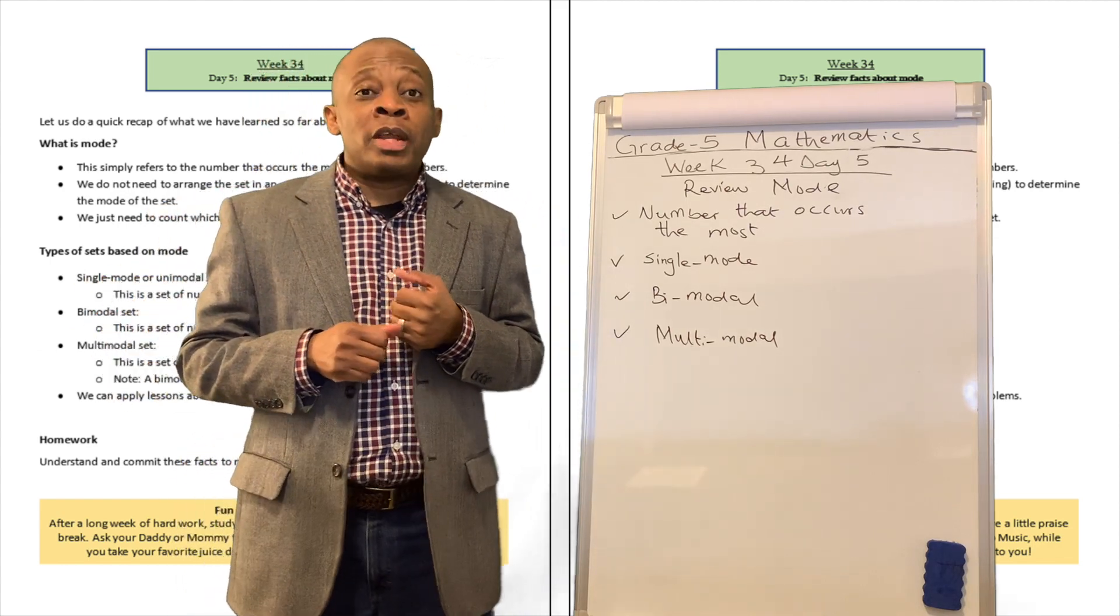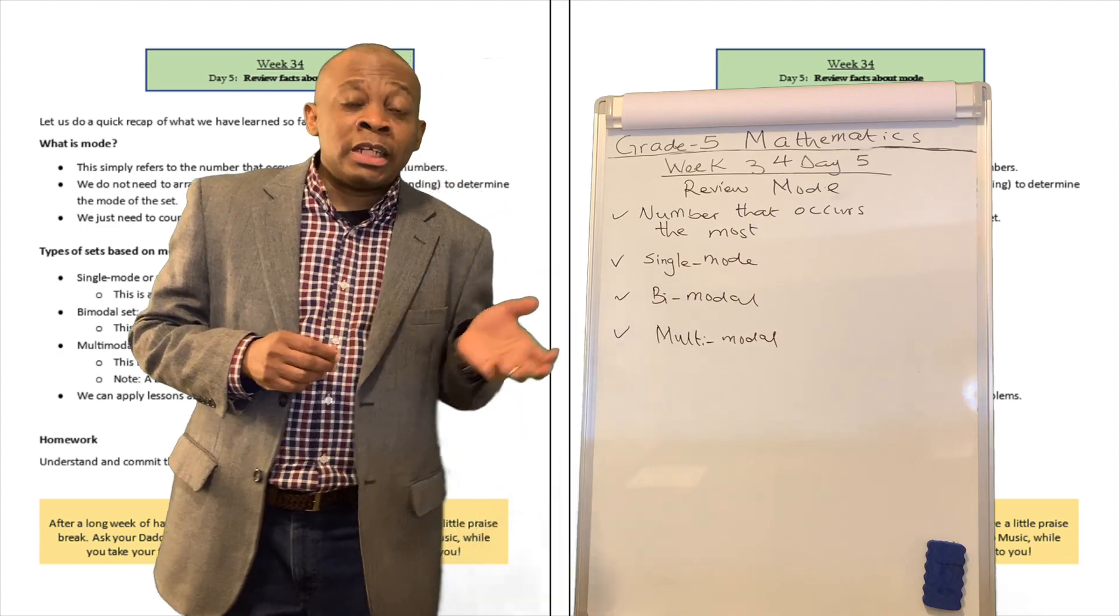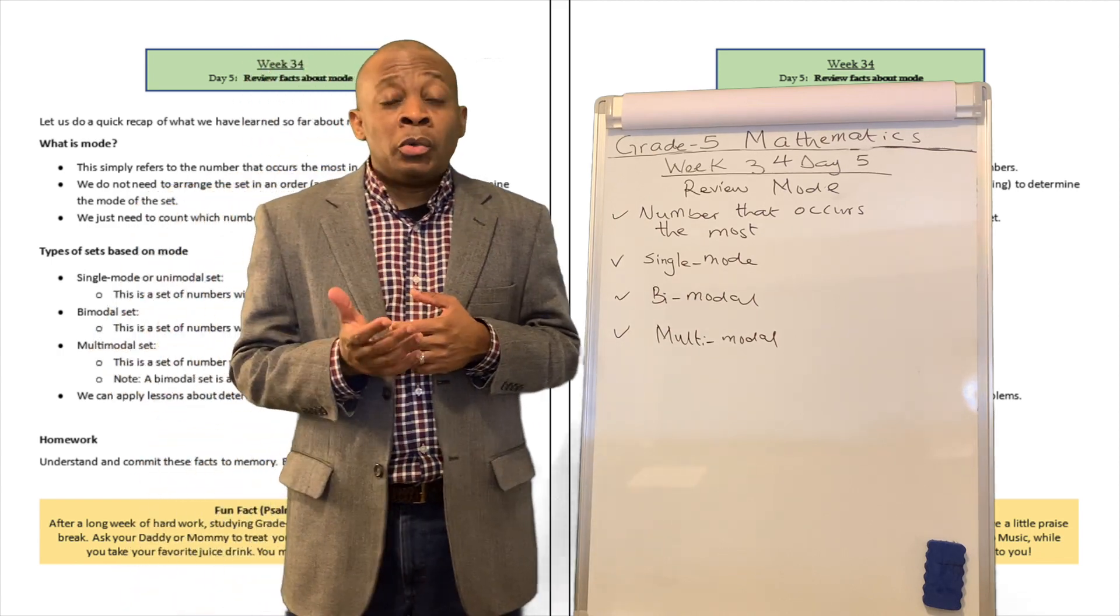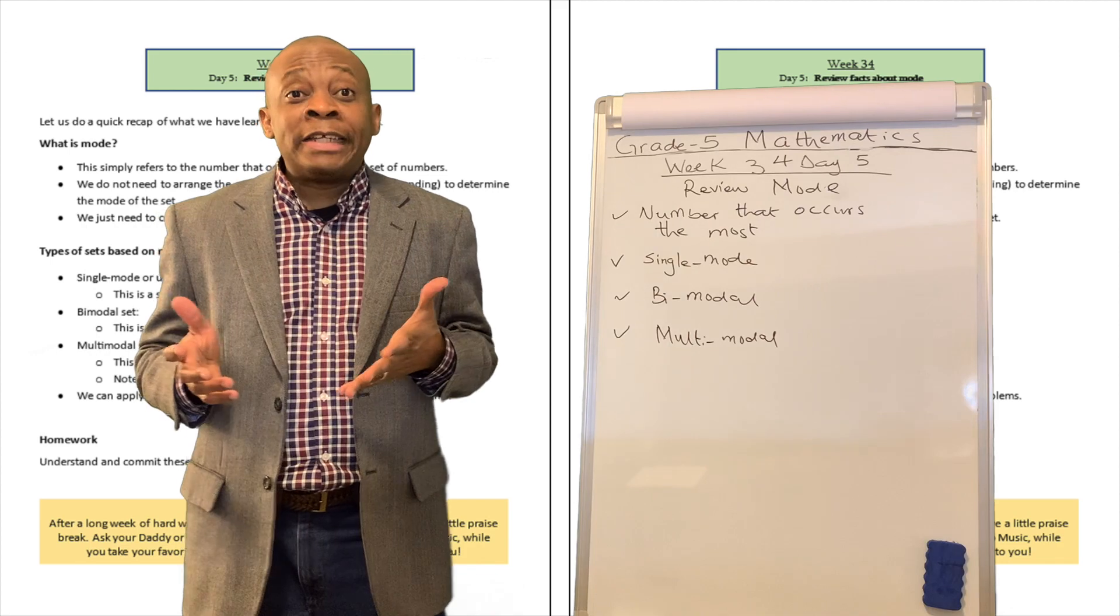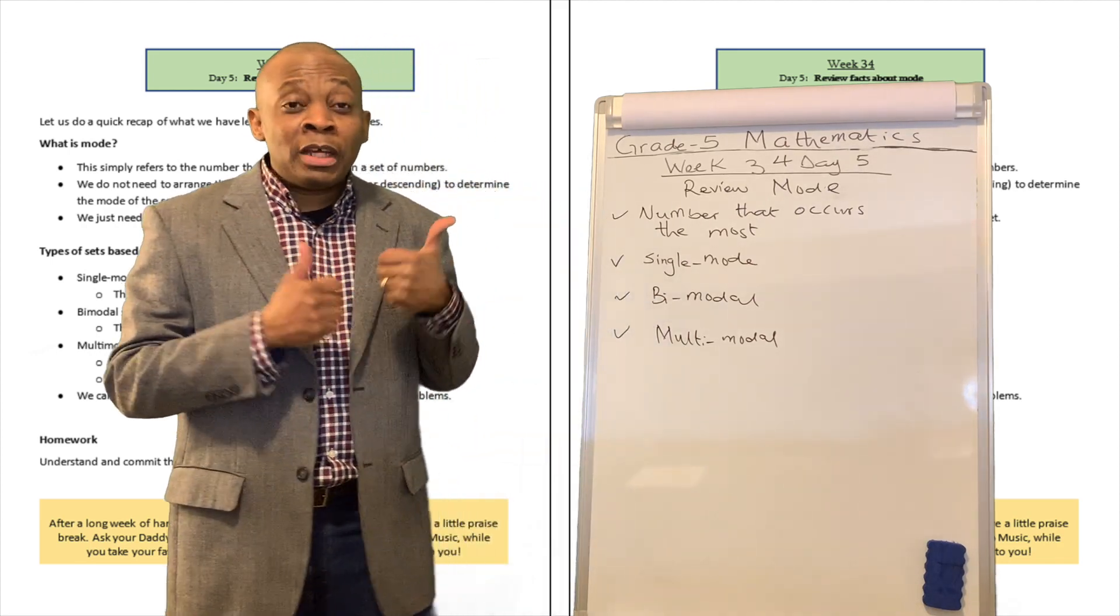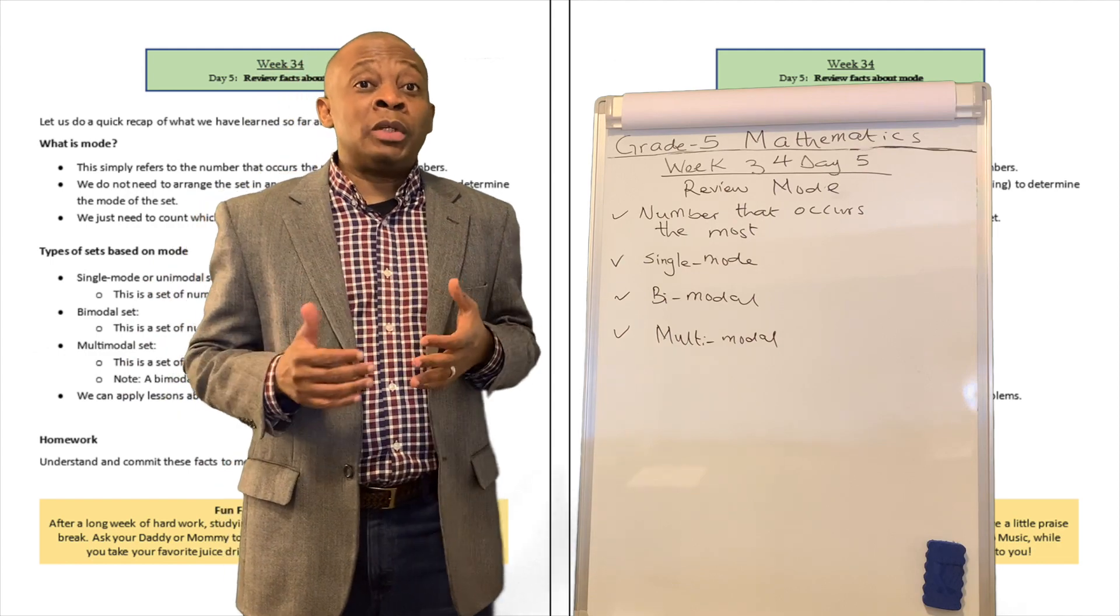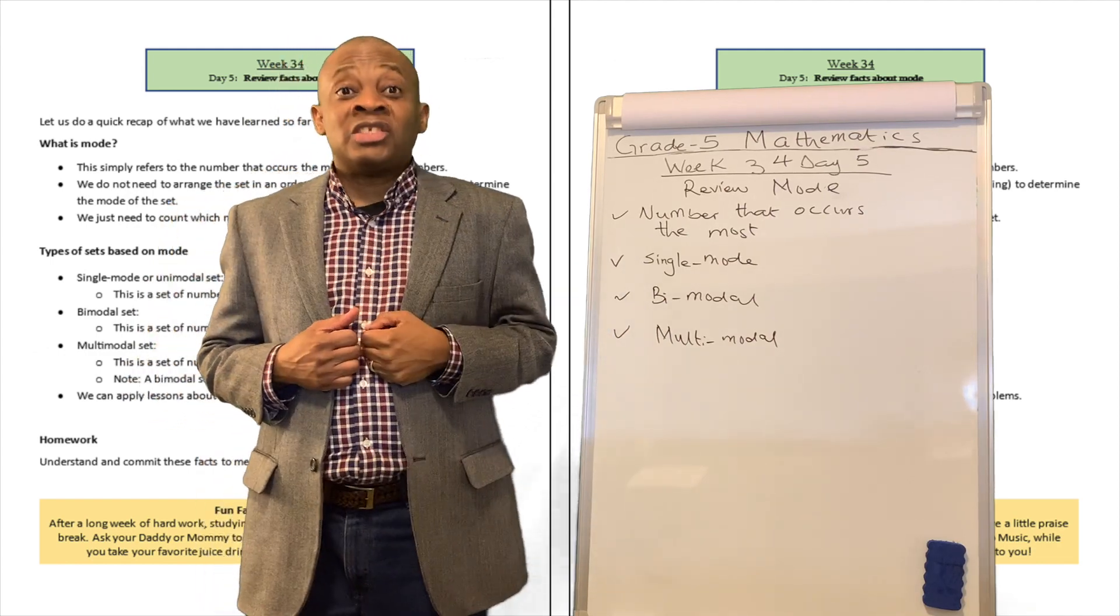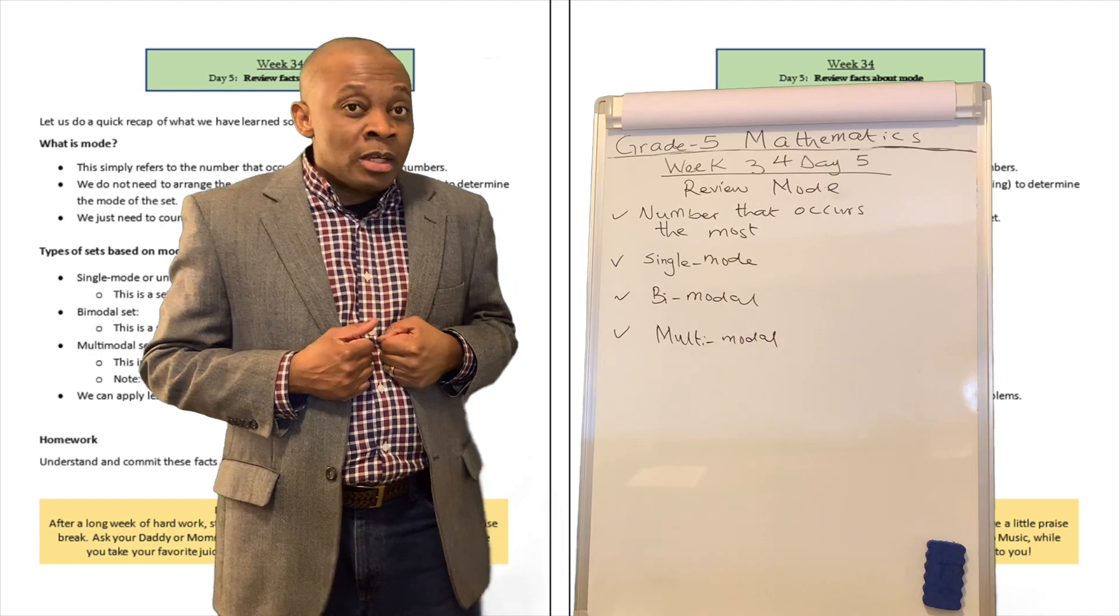And you do not necessarily have to arrange a set of numbers in ascending order or descending order to know or find or determine its mode. It's just the number that occurs most frequently in a set of numbers. That's going to be the statistical mode of that set.